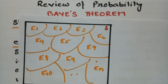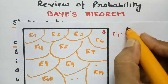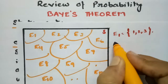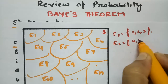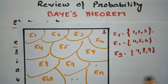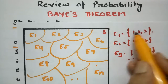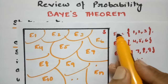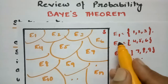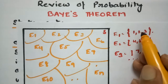Exclusive means — have you heard about an exclusive showroom? The variety sold in that showroom is nowhere available in any other showroom. Similarly, in event sets: E1 has values 1, 2, 3; E2 has 4, 5, 6; E3 has 7, 8, 9 and so on. There is no coincidence between the two sets, so this is mutually exclusive.